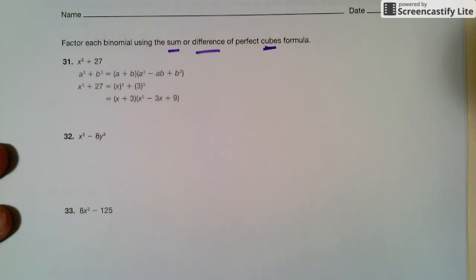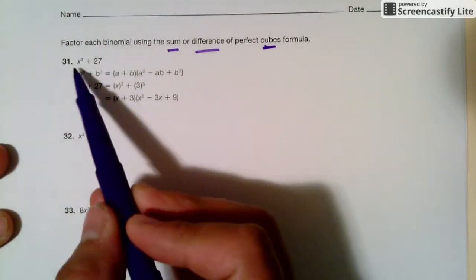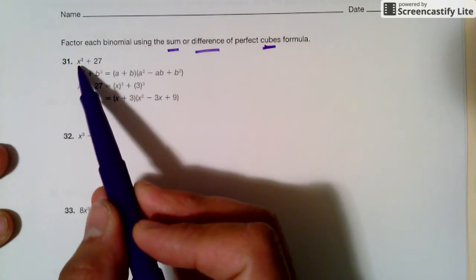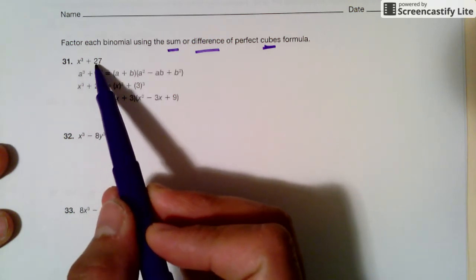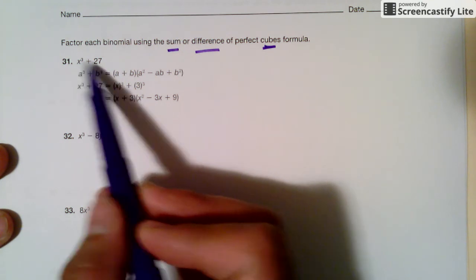Factor using the sum or difference of perfect cube formulas. So for this one, first thing is, there are only going to be two terms, and one of them has a cube. This one is also a cube, but we don't see it, so we have to rewrite. So there's actually two cube pieces.